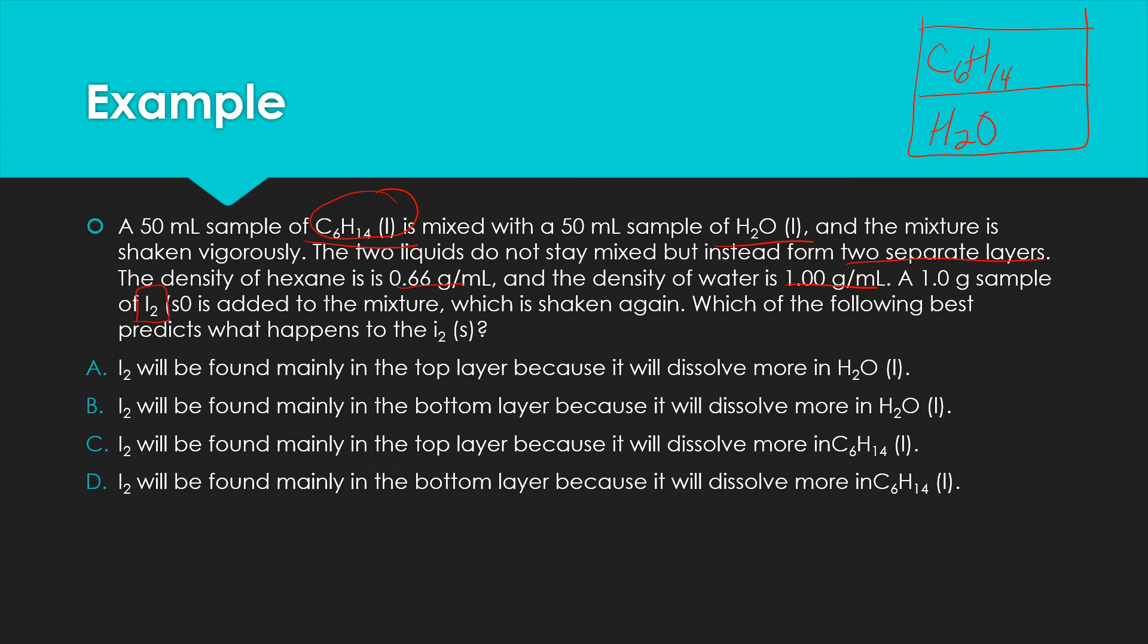Now, a 1 gram sample of iodine, I2, that's a solid, is added to the mixture which is shaken again. Which of the following best predicts what will happen to the I2 solid? Alright, so we're adding iodine, I2, one of our diatomic molecules would be nonpolar. So if we added it to this container and shook it up, we're going to still get this C6H14 and water layers. And our nonpolar chemical is going to dissolve in the other nonpolar substance, in the nonpolar solvent. So we're going to get I2, which is nonpolar, in that top layer. So I2 will be found mainly in the top layer. So those two are correct, A and C, because they say it's being found in the top layer. And it says because it will dissolve more in water, that's not true. Or letter C, because it will dissolve more in C6H14. And there is our answer.